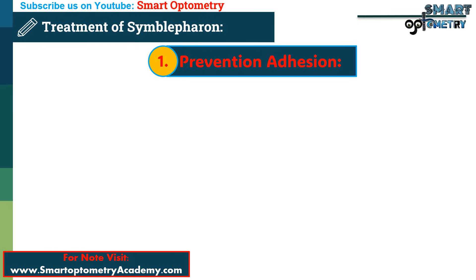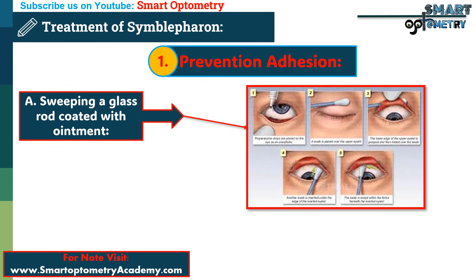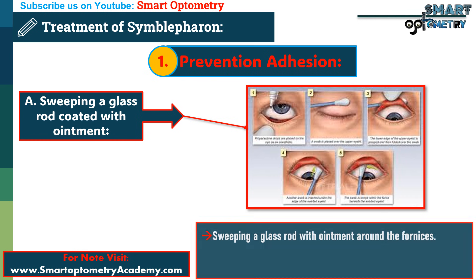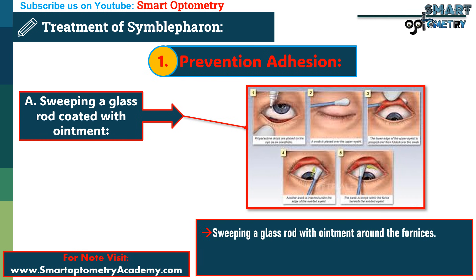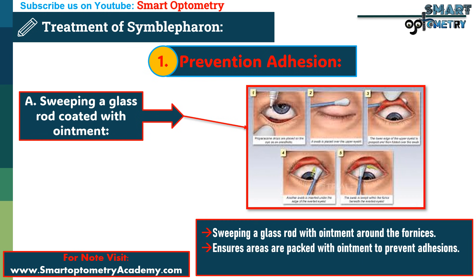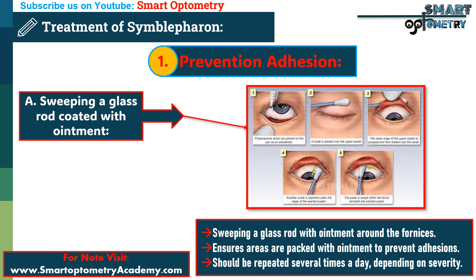1. Prevention of adhesion. It can be done in two ways. a. Sweeping a glass rod coated with ointment. Prevention begins with sweeping a glass rod coated with ointment around the upper and lower fornices. This ensures the areas are packed with ointment to prevent adhesions. The procedure should be repeated several times a day, depending on the severity of the condition.